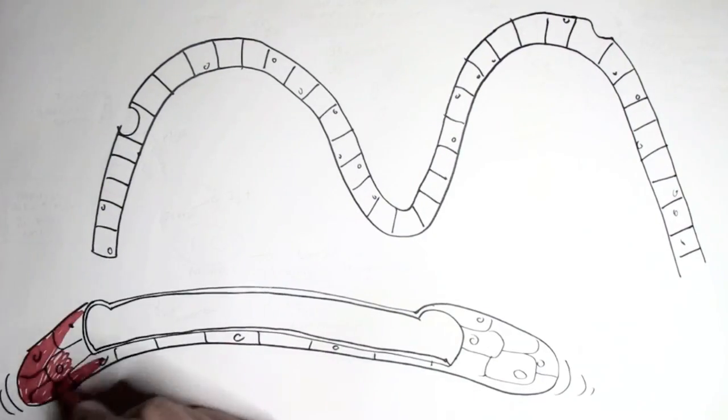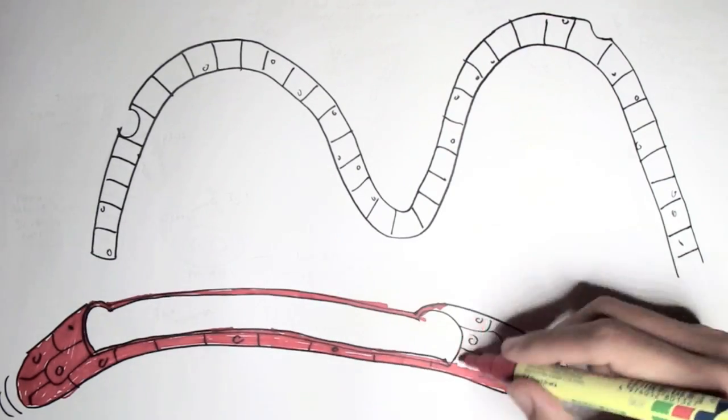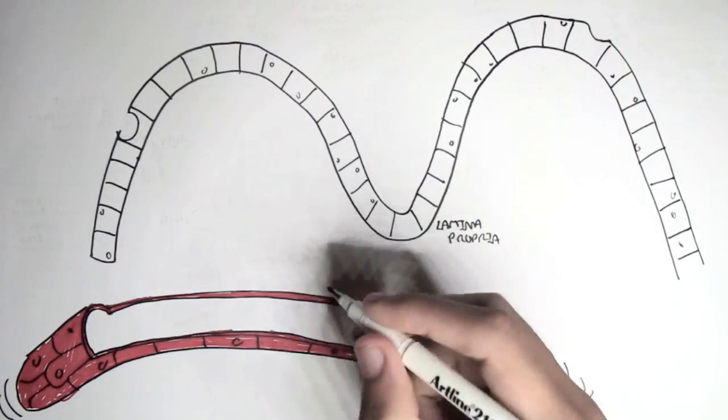This is the lamina propria of any mucosal system. It can be in the nasal, the gut, or the bronchus for example.